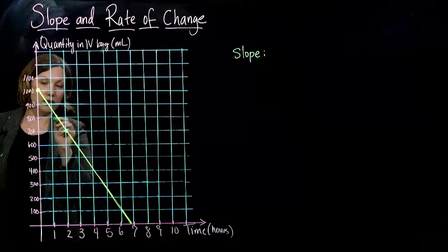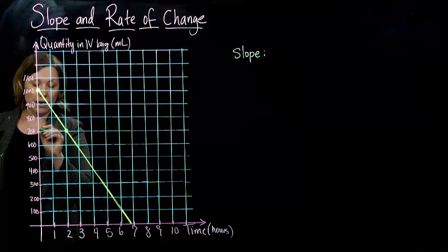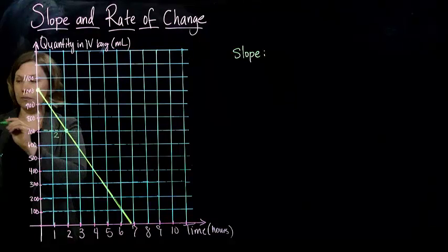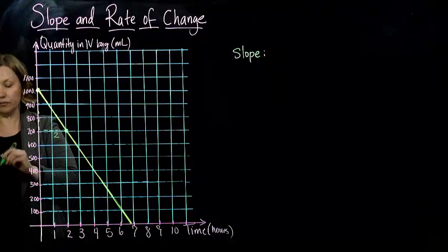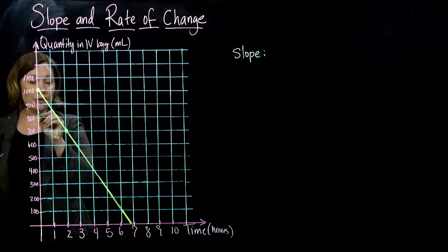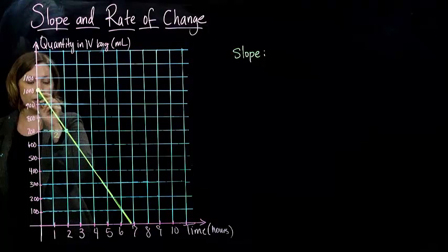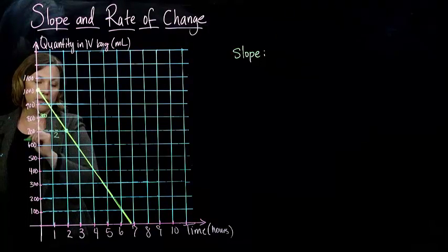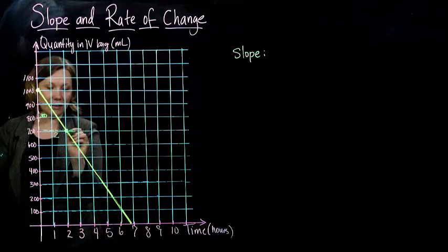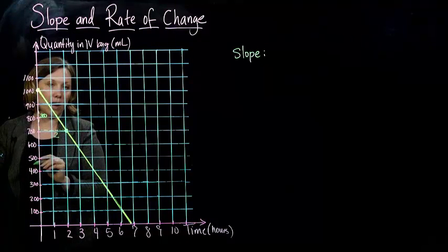So if we go over and then up, we see we went over 2 and up 1, 2, 3. But these are in 100, so we went up 100, 200, 300. But we didn't go up, we actually went down. We went positive 2 in the X direction and down in the Y direction.